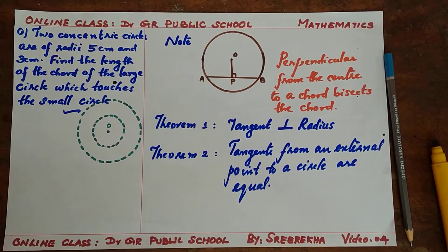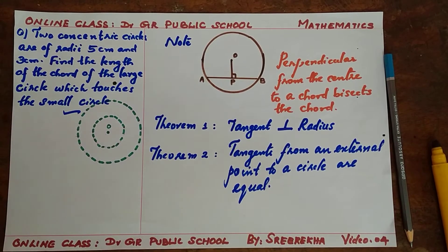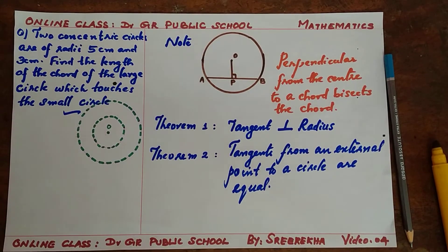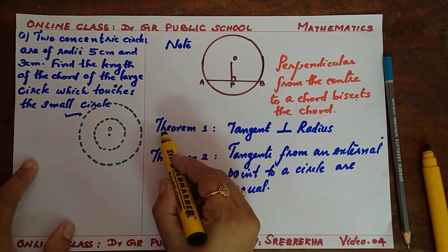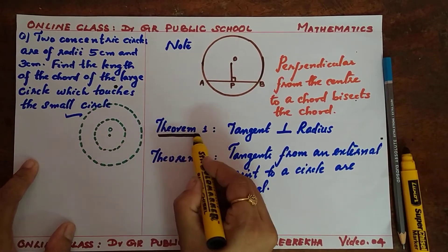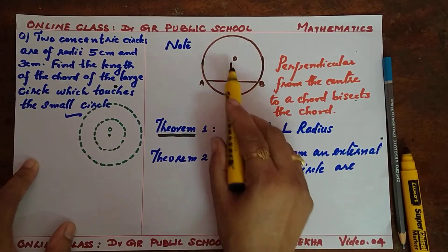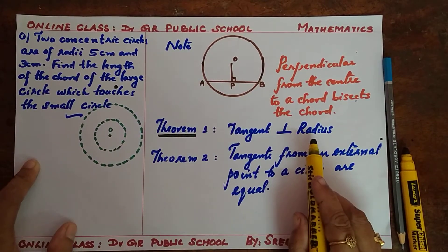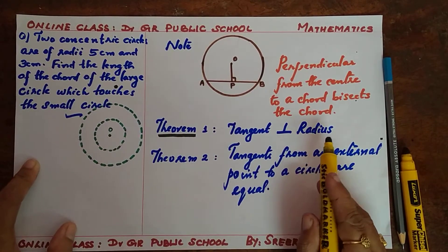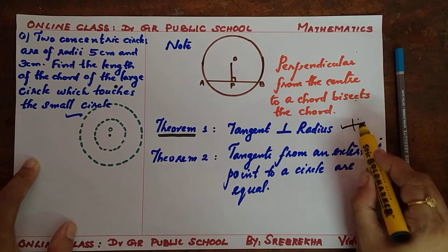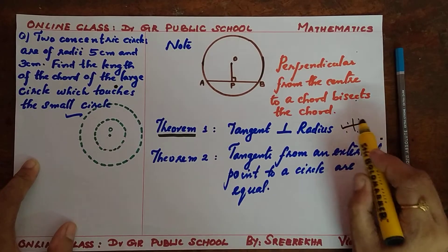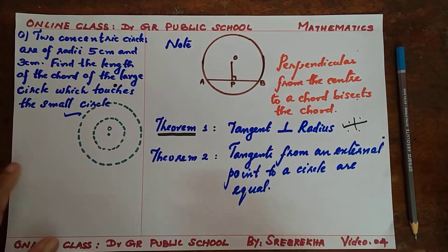Jai Hind, dear children. I hope all of you watch today's videos. The first video deals with Theorem 1: the tangent is always perpendicular to the radius. This is a very important theorem — the tangent and radius are always perpendicular to each other.